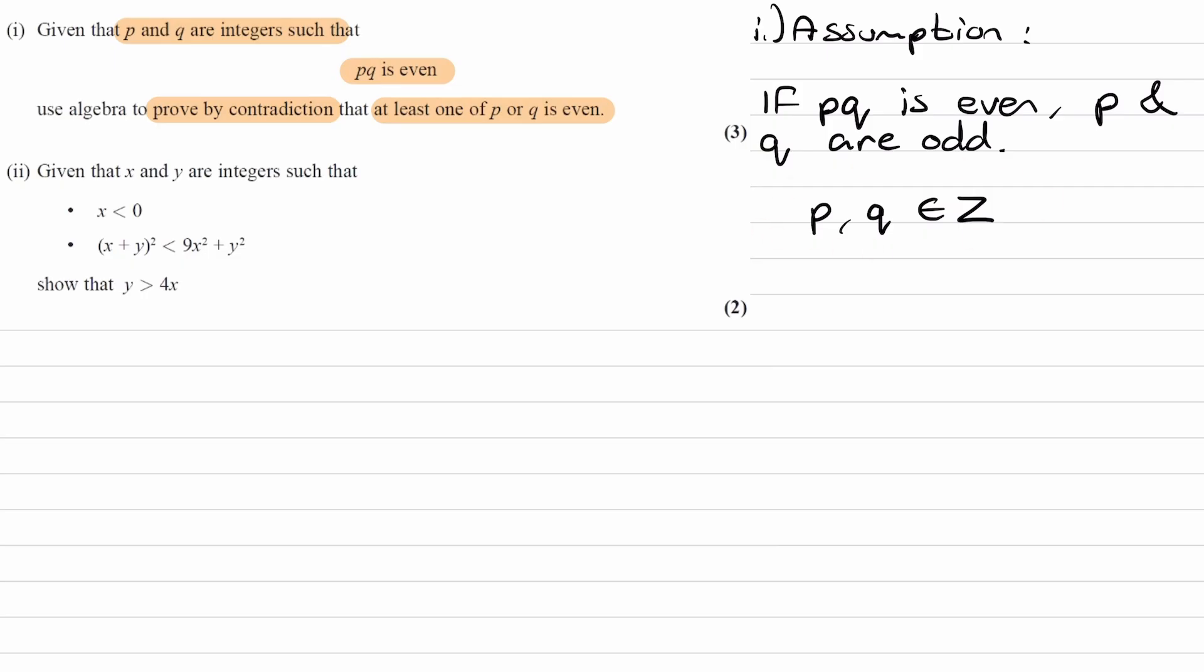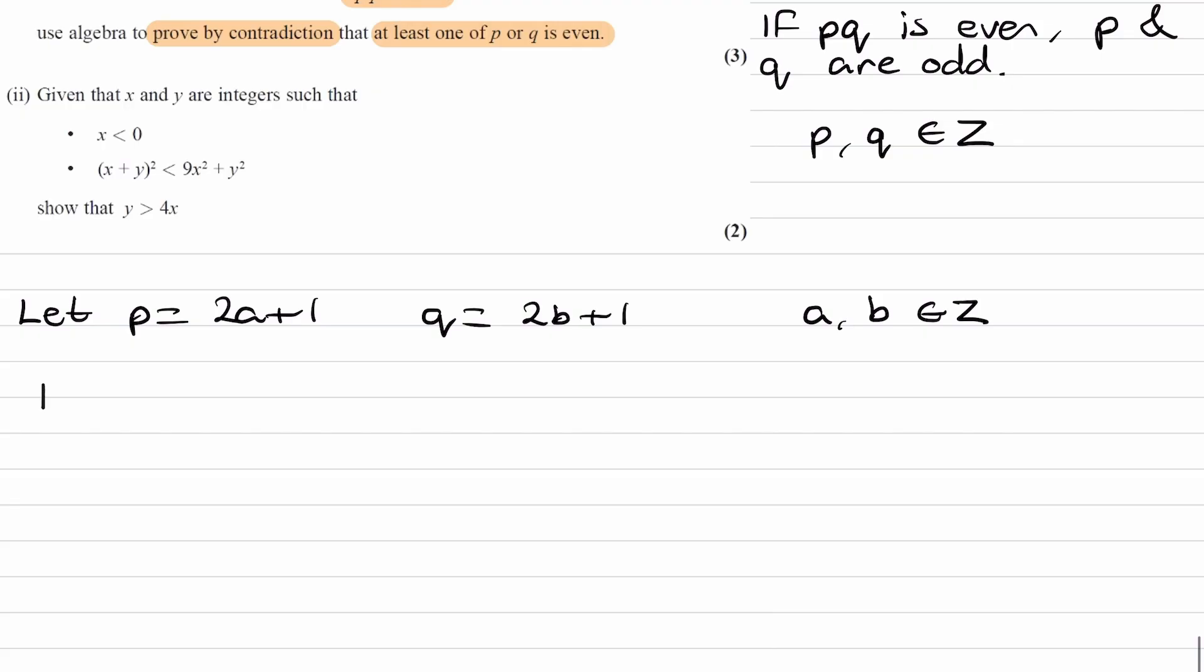Okay, so P and Q are odd, we're starting with that. So then we can say, let P equal to, let's say, 2A plus 1, and let's say Q is equal to 2B plus 1, where both A and B are integers. So these are ways in which we can express odd numbers. So we can then multiply the two things together. PQ is then 2A plus 1 times 2B plus 1. Let's expand this out.